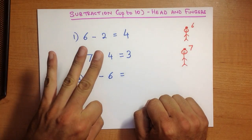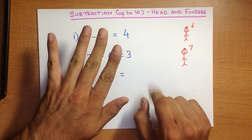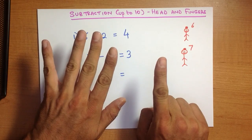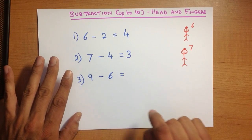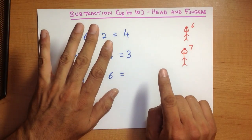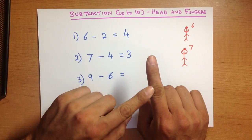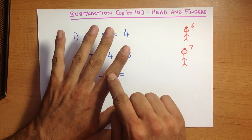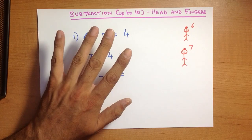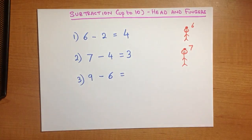So let's count out 6: 1, 2, 3, 4, 5, 6. We've got 6. 6 is in my hand. 9 minus 6. So 9 is on my head. Let me take away this one first: 9, 8, 7, 6, 5, 4, 3. And that is our answer.